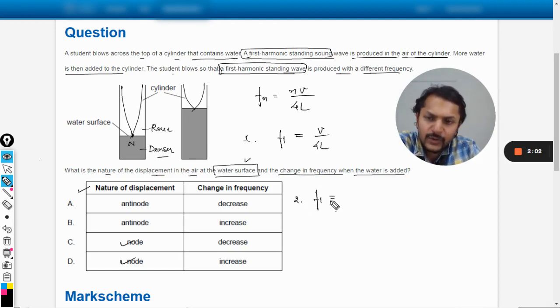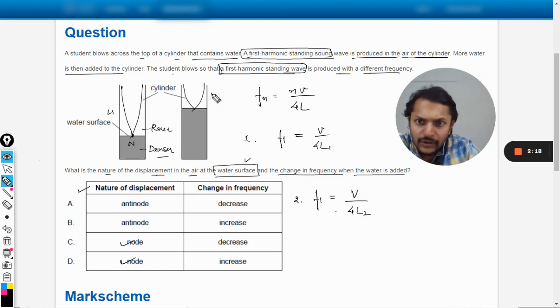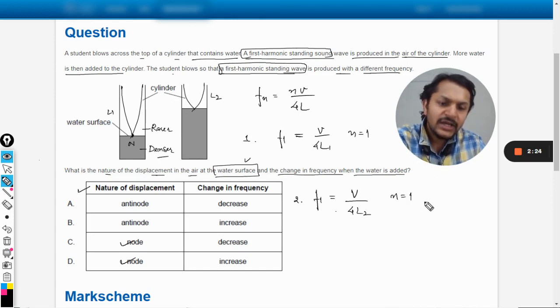In the second case, the frequency will be given by v divided by 4L2. The length is L1 in the first case and L2 in the second. We are considering the first harmonic in both cases, so here I've substituted n equals 1, and here also I substituted n equals 1. This is the first harmonic equation.